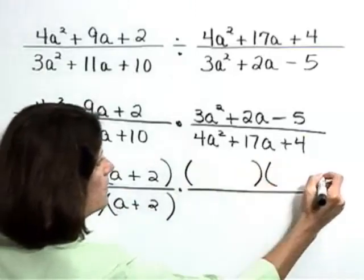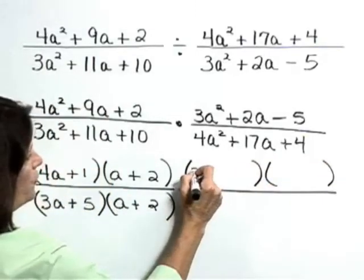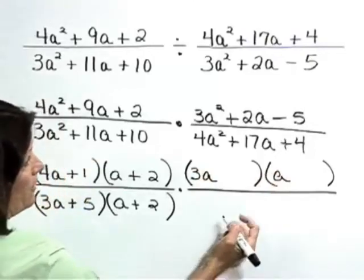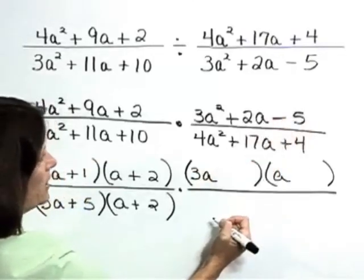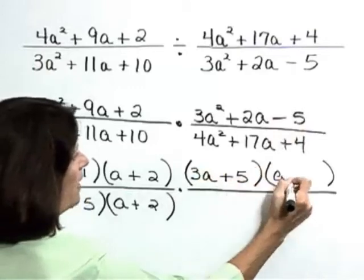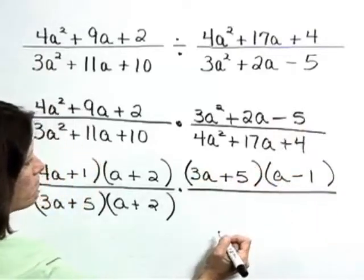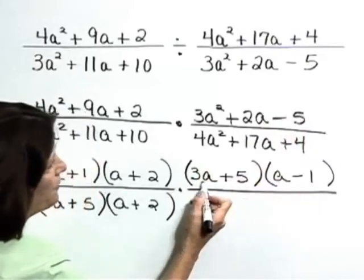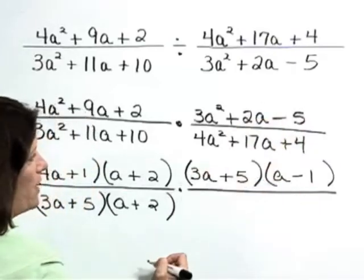On to our second rational expression, factoring the numerator. Our first terms are going to have to be 3a and a. Factors of negative 5 that are going to work in here are a plus 5 and a minus 1. Checking 5a and a negative 3a gives 2a, so that's correct.